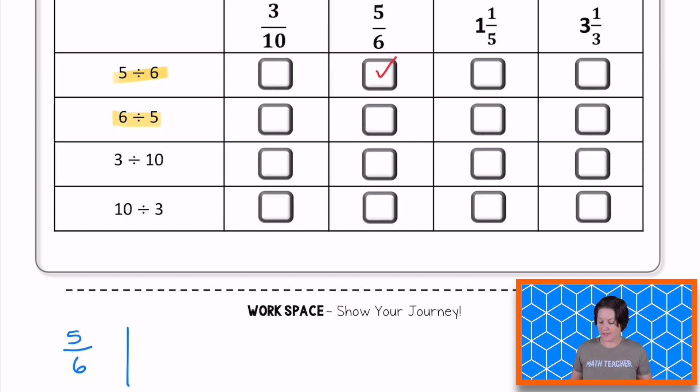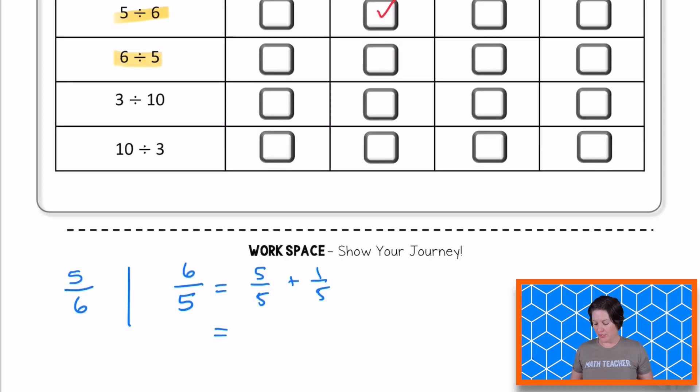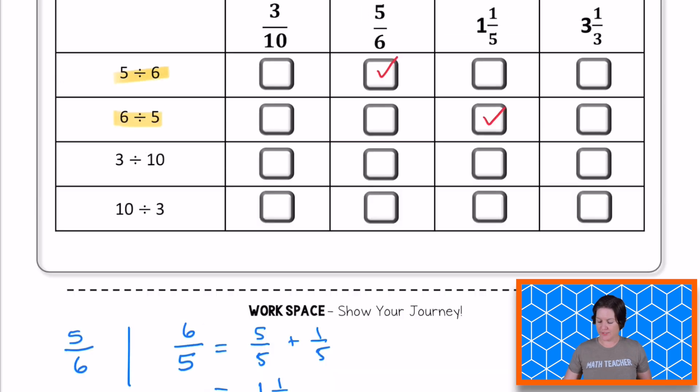Let's try the next one. We've got six divided by five. Well, as a fraction, we can write that as six divided by five, or six fifths. Now I don't see an answer that says six fifths, but I do see an answer that says one and one fifth. And that's true because six fifths can be decomposed as five fifths plus one fifth. And five fifths is the same as one whole, right? So this would be equal to one whole and one fifth.